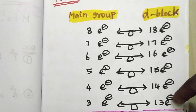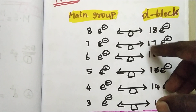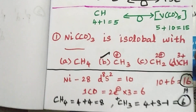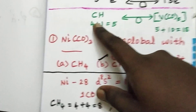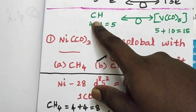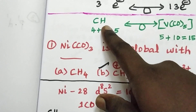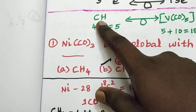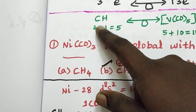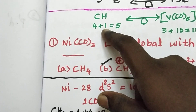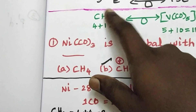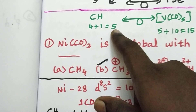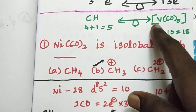This is our trick. How do we apply this trick? Let's look at an example. Let's look at CH. Carbon has 4 valence electrons, hydrogen has 1, so CH is 5 valence electrons total. That corresponds to Vanadium.